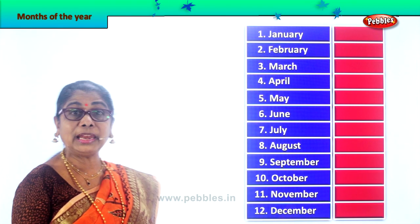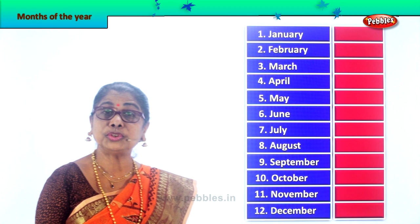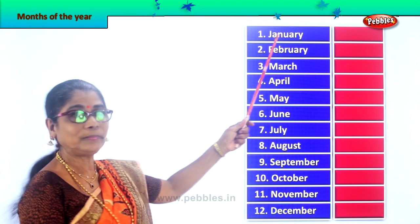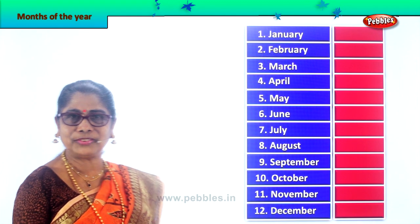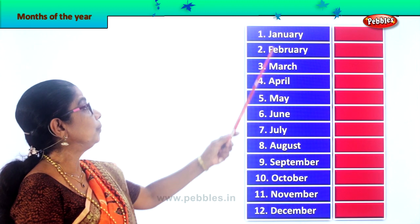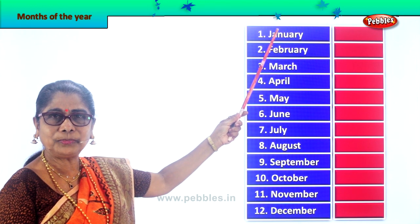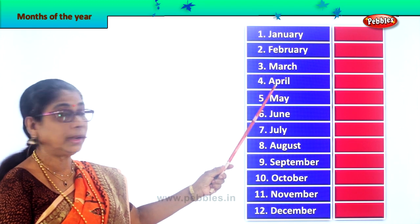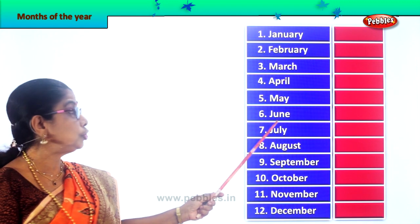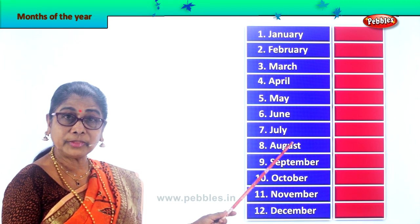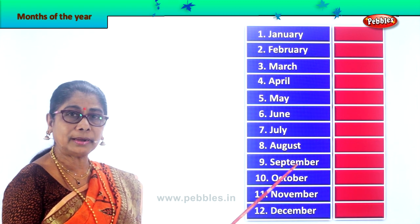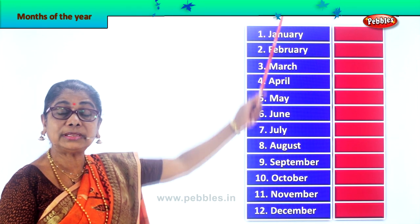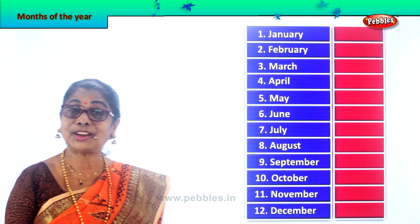Now you must learn the spellings too. It is very easy to learn, because you have this calendar both at home and at school — sight learning. One look and you must say, this is January. Let's look at all the months now and read together. So these are the 12 months of a year.